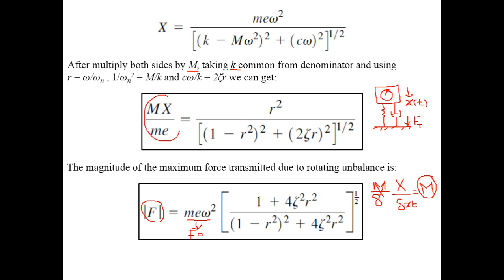The ratio MX/(me) is a dimensionless ratio known as the rotating unbalance. As we have seen in all previous cases — whether displacement transmissibility, force transmissibility, or magnification factor — all these ratios are dimensionless and can be represented in terms of ζ (damping factor) and r (frequency ratio). Again, the rotating unbalance is expressed in terms of the dimensionless parameters r and ζ.